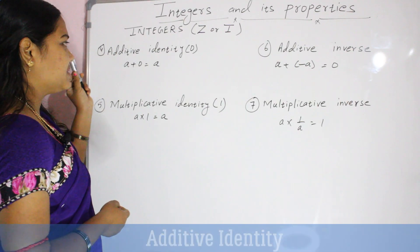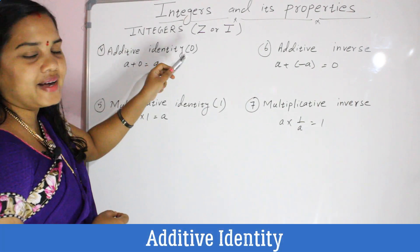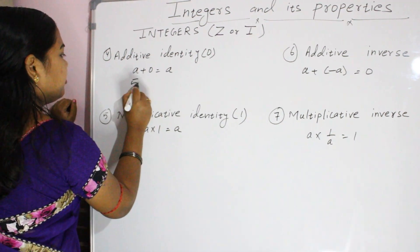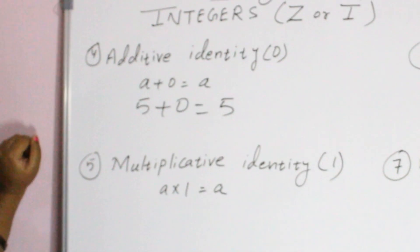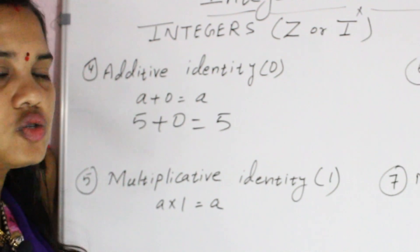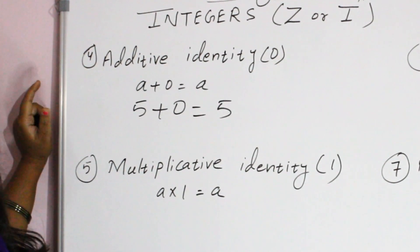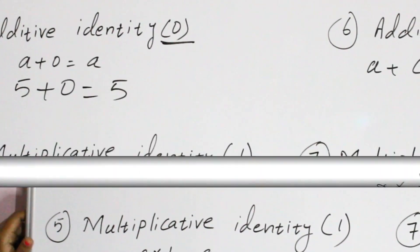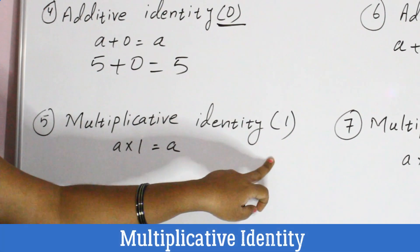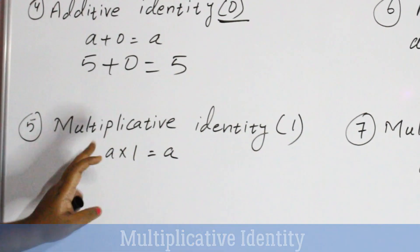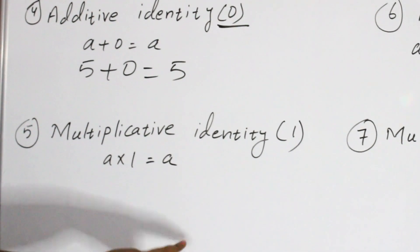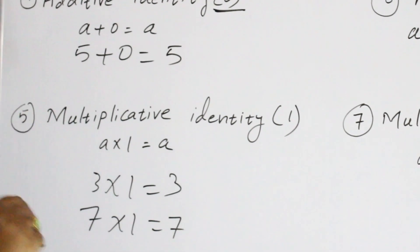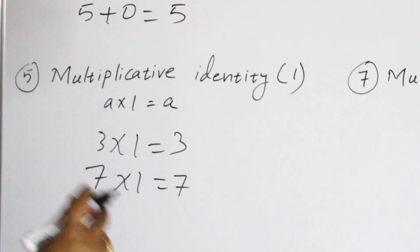The next property is additive identity. Zero is the additive identity because any number plus zero equals the number itself. So zero is called the additive identity. Next is multiplicative identity: one is the multiplicative identity because any number multiplied by one equals the number itself — for example, three into one is three, seven into one is seven.